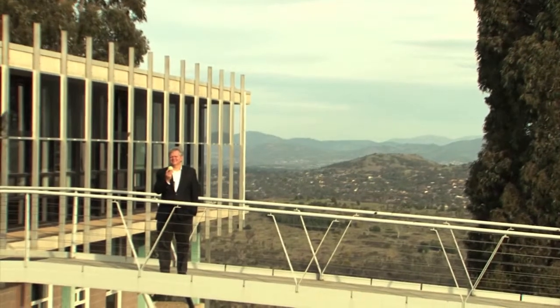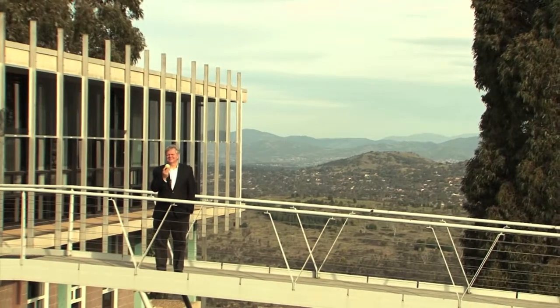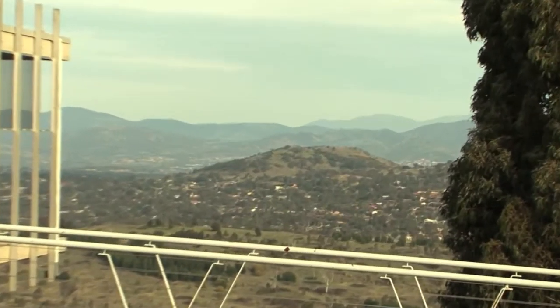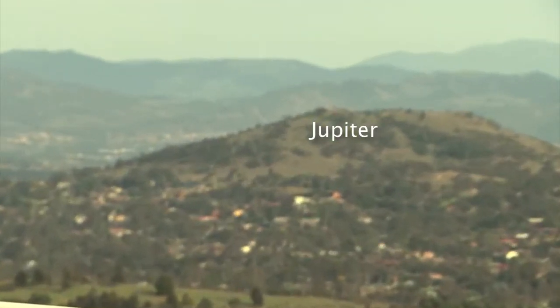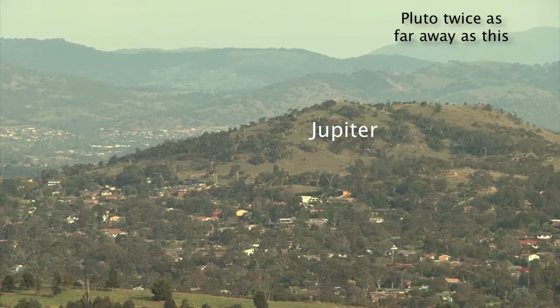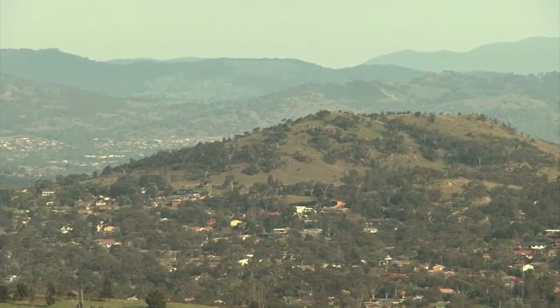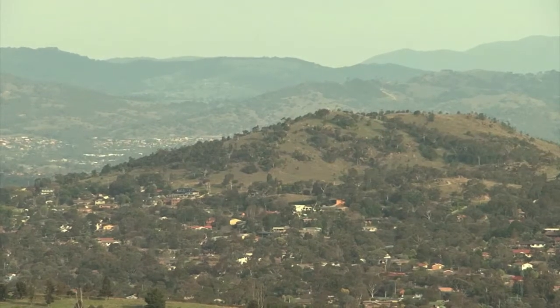As our scale, imagine the Earth is this size, the size of this ball. To that scale, the moon would be the size of a tennis ball, about 10 meters away. Jupiter would be the size of a car on that hill. Pluto would be about twice as far away as this mountain. That's the solar system. To get to the nearest other solar system, Alpha Centauri, you'd have to go 25 times around the world.